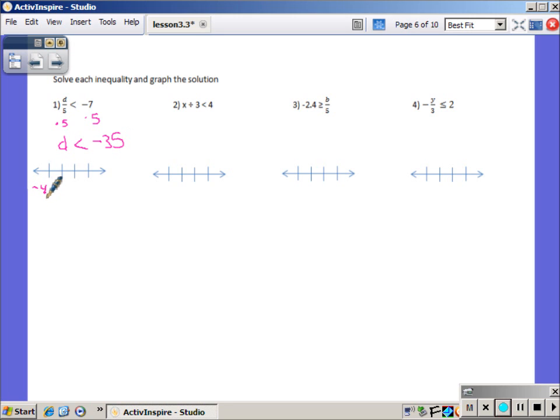And then remember, at least three values on those number lines. So negative 35, no or equal to, open dot, less than, my shading will come to the left there.